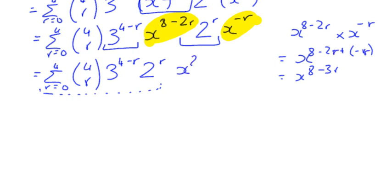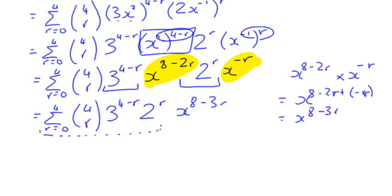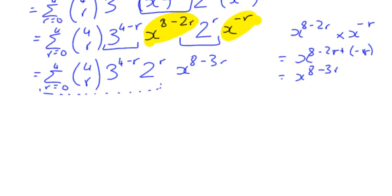I've got X to the power 8 minus 3R. That might seem like a bit of extra work, but once you get the hang of it, you can write that out quite quickly. And the advantage that we have now is that when we're writing out our expansion, we've actually simplified it down to one term in X for each of the parts of the expansion.